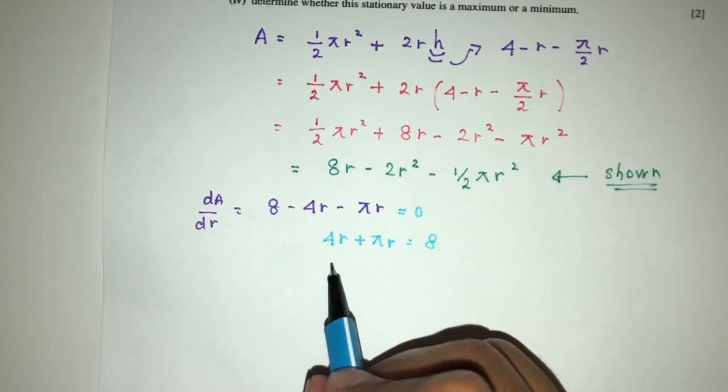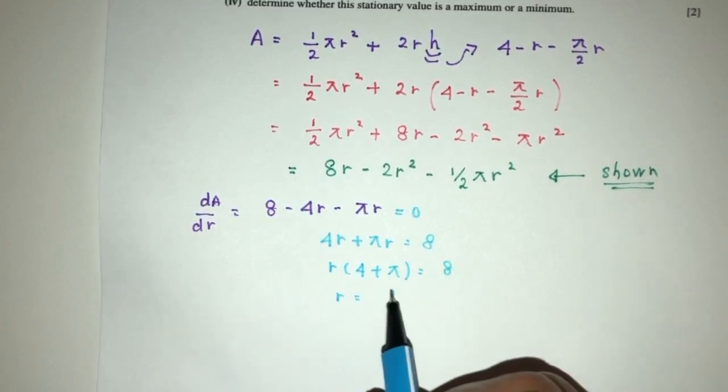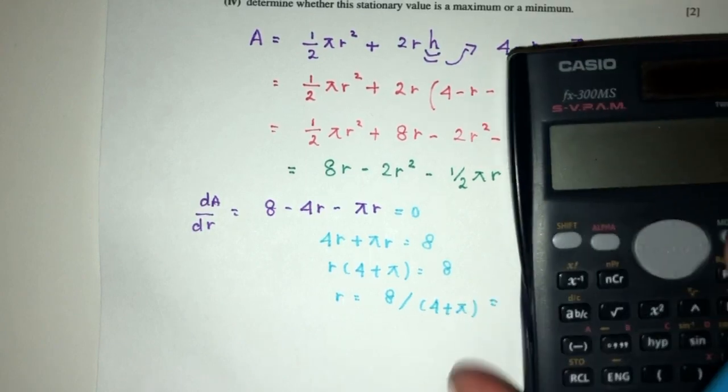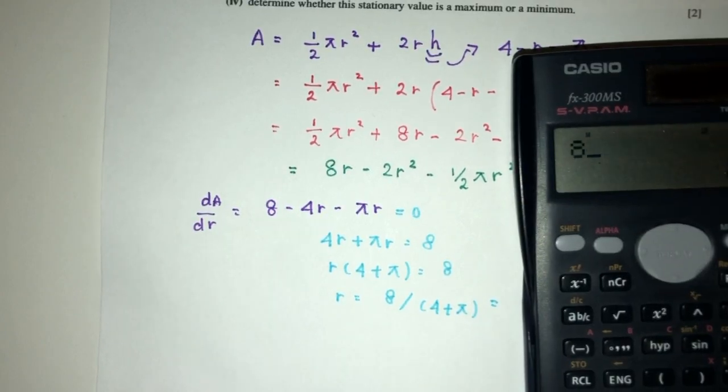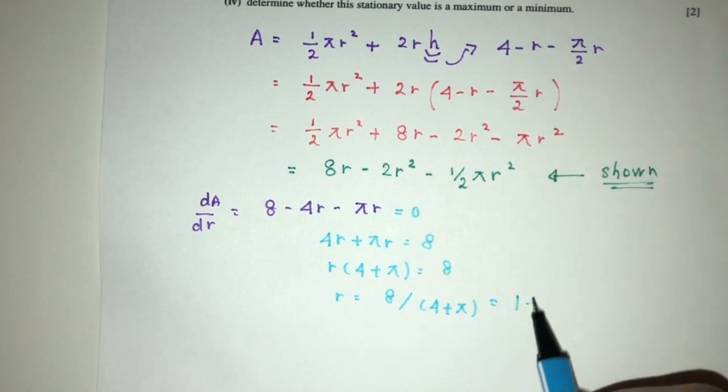So divide, so we just factorize, you will have (4 plus π)r = 8, r will have to be 8 divided by 4 plus π. Let's calculate that, you will have 8 divided by 4 plus π, that should be 1.12.